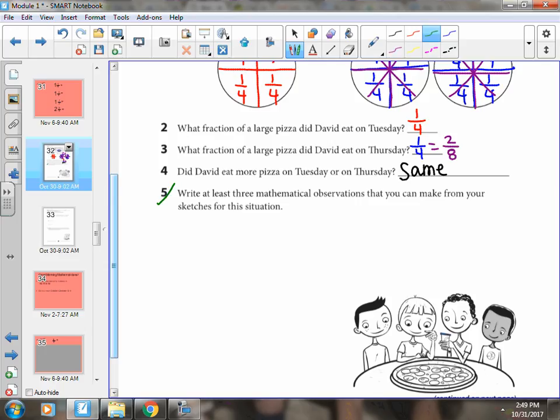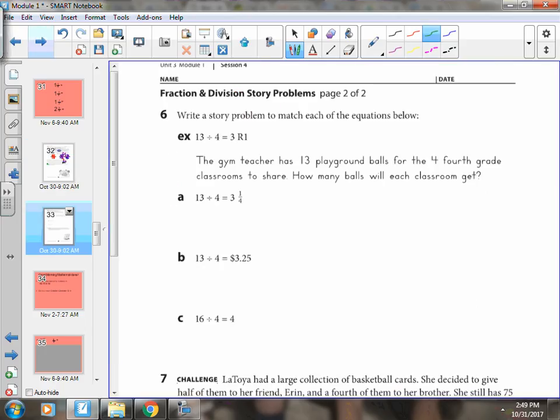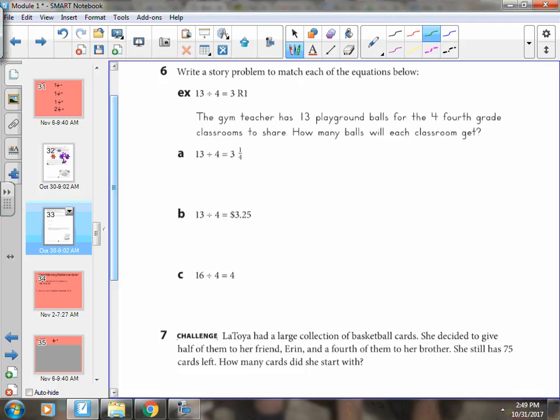Number five, we're going to skip on to the back. Number six, write a story problem to match each of the equations below. Obviously, everyone's story problem could be different. The only thing I want you to notice is the answer and how they showed the remainder. Notice the example shows the remainder as a remainder. So those would be things that you couldn't split up. Like in this particular one they were talking about playground balls. Yes, I suppose you could take a saw and slice one in half, but it really wouldn't be very useful after that.